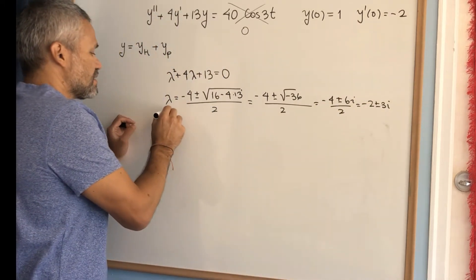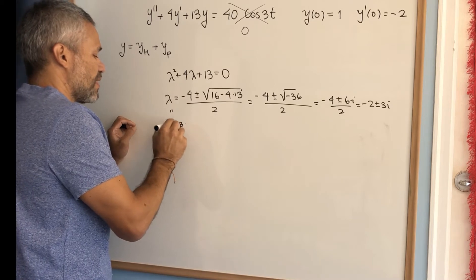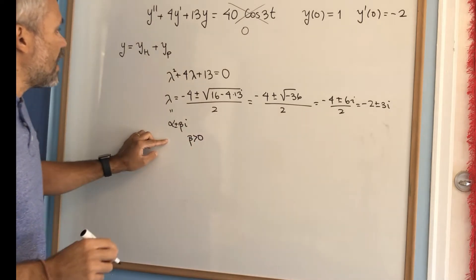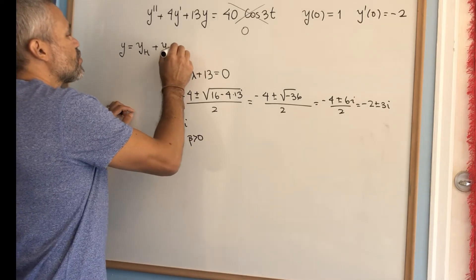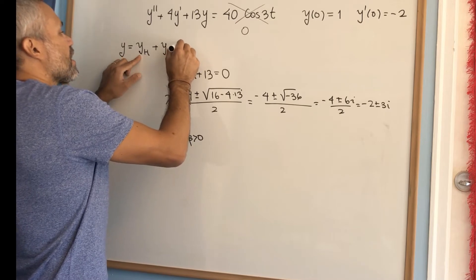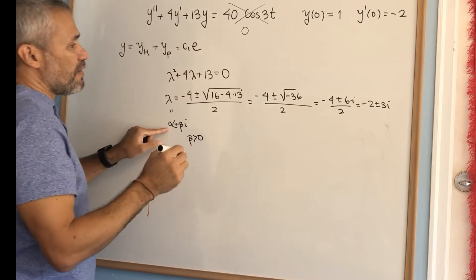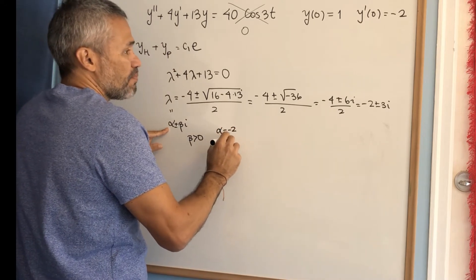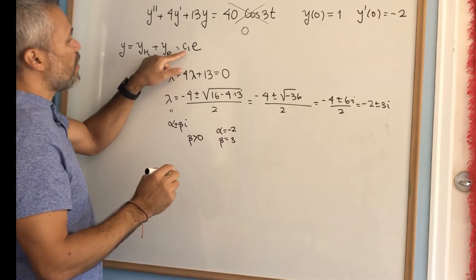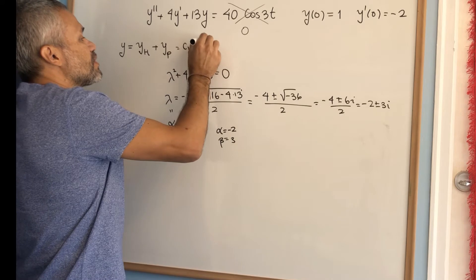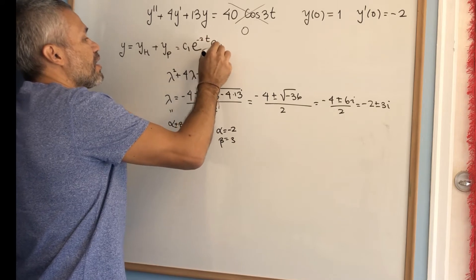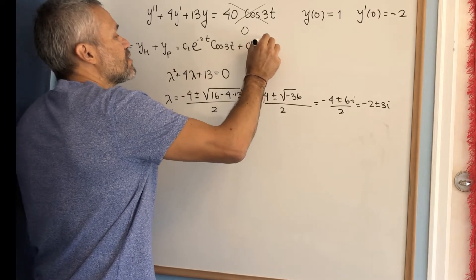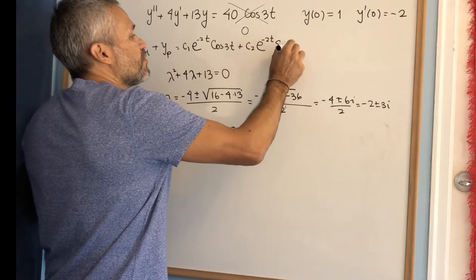We see this as alpha plus or minus beta·i with beta greater than 0. That means the homogeneous solution is c1·e^(alpha·t)·cos(beta·t) plus c2·e^(alpha·t)·sin(beta·t). Here alpha equals negative 2 and beta equals 3, so the homogeneous solution is c1·e^(−2t)·cos(3t) plus c2·e^(−2t)·sin(3t).